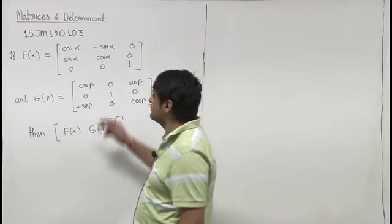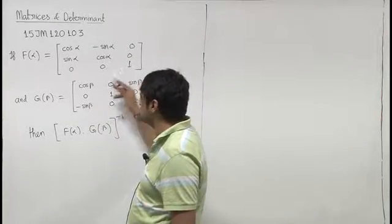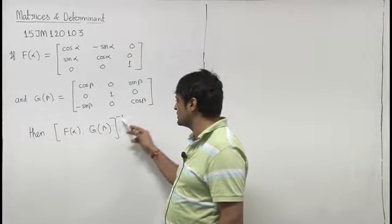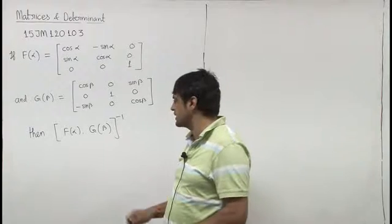In this question we are given f of alpha is this matrix, g of beta is this matrix, then f of alpha into g of beta inverse - what will this be?